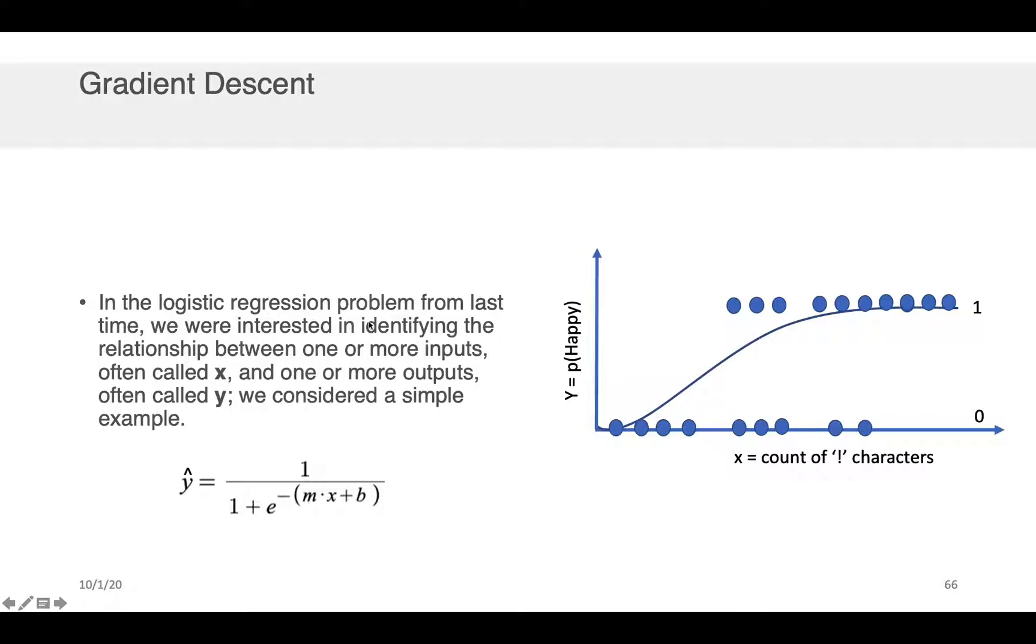Remember that logistic regression is just a way of mapping a variable x to a variable y when the relationship between x and y saturates at some point. This is usually the case when the output y is binary or when the output y is constrained within some range.